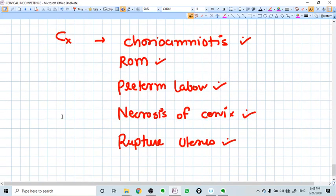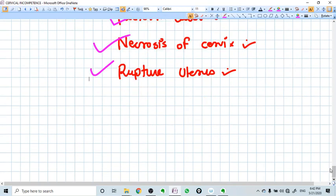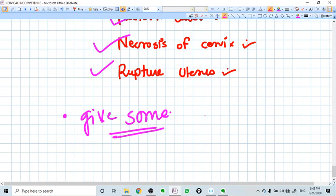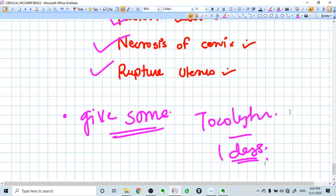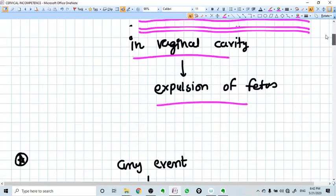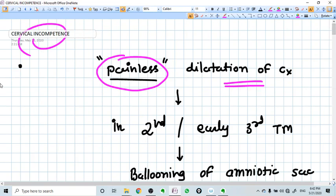What can be the complications? Chorioamnionitis, rupture of membranes, preterm labor, necrosis of cervix, rupture of uterus - all can happen. So once you do cervical cerclage, you must give tocolytics for the next one day to prevent uterine irritation and starting the process of abortion. This was cervical incompetence. Thank you.